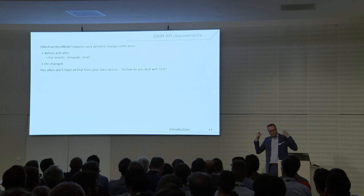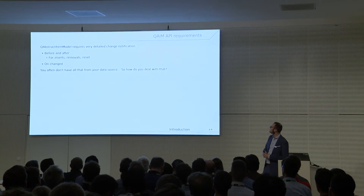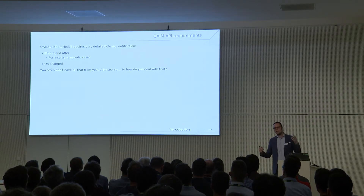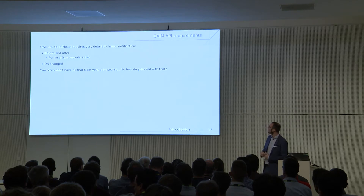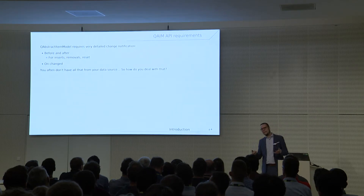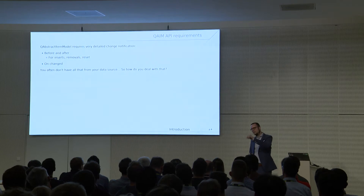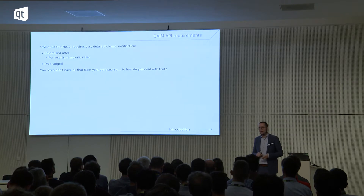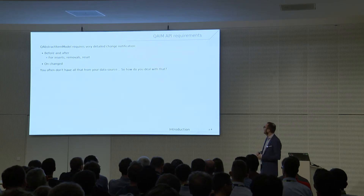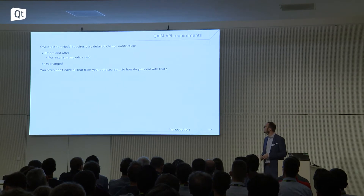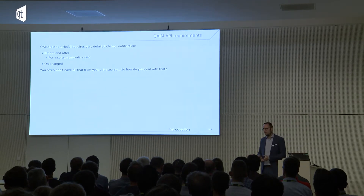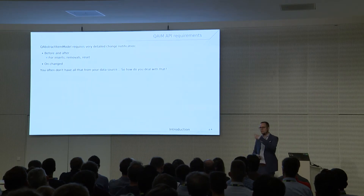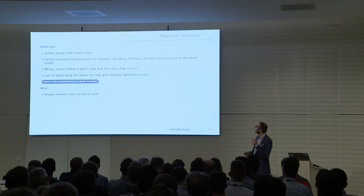The QAbstractItem API requirements are quite strict. They need a lot of detail — you have to tell the API upfront what you're going to change for inserts and removals. Where are you going to insert your data? That's quite hard to do when your backend just gives you a data changed signal. You have to use dataChanged of course, but your data source doesn't give you the granularity you need. That's the main problem, and I'm focusing on lists since they cover 90% of use cases.